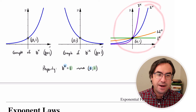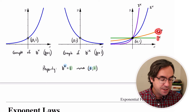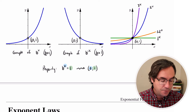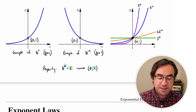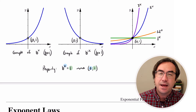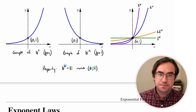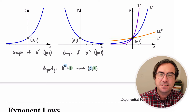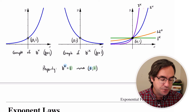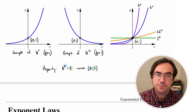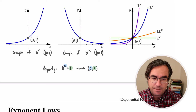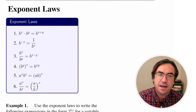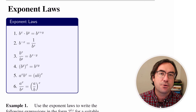One thing we notice on this graph is that as the base term gets bigger, the exponential curve gets steeper. The curve for 2 raised to the x is not quite as steep as the curve for 3 raised to the x. In class, we're going to see there's a special exponential function that sits in between those two and has some special properties — that's the one we're primarily going to be using.